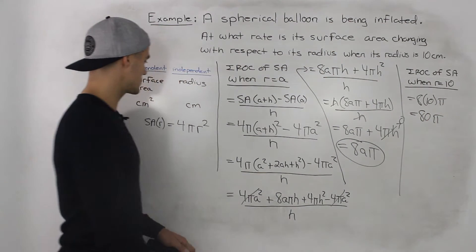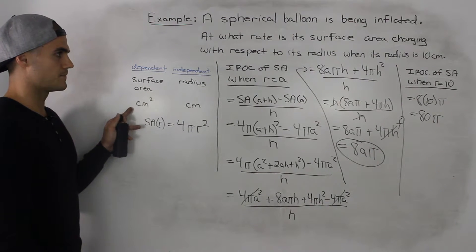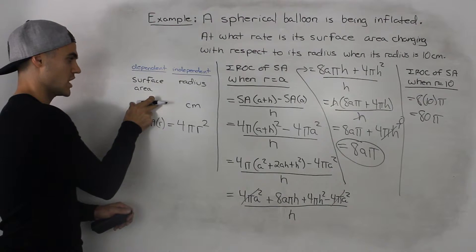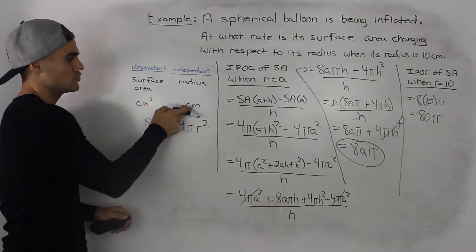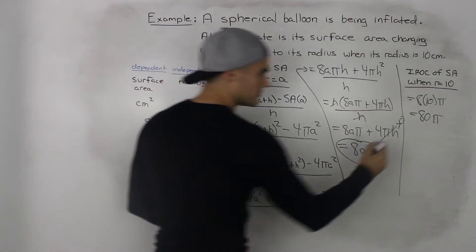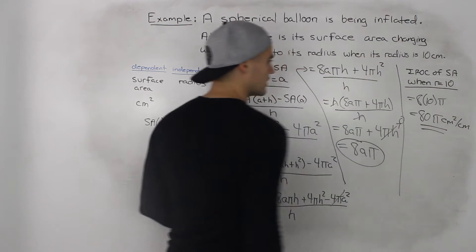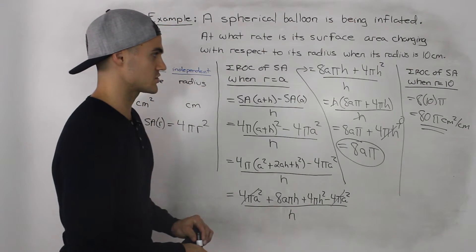And in terms of the units, rate of change is change in the dependent variable per one unit change in the independent variable. So this would be centimeters squared per centimeter. So that there is our final answer.